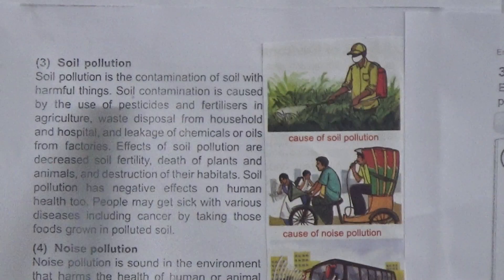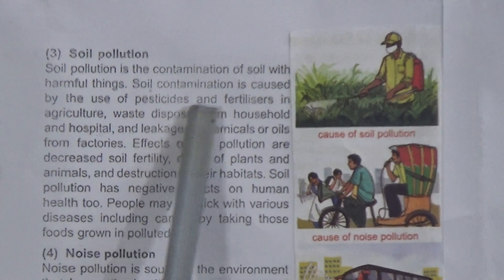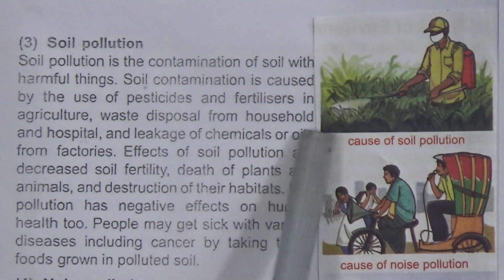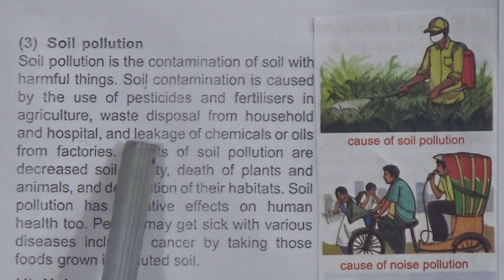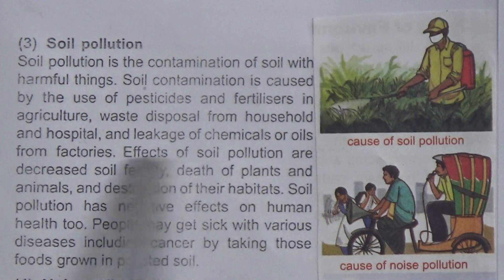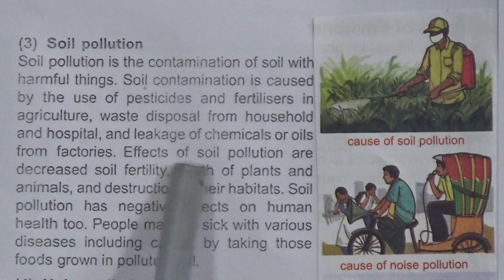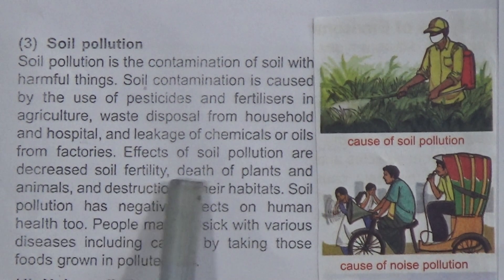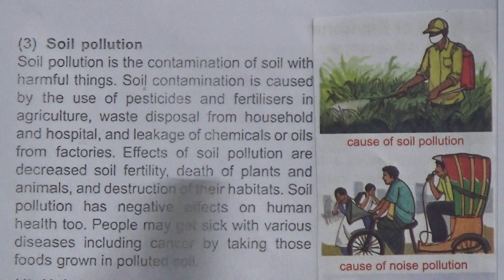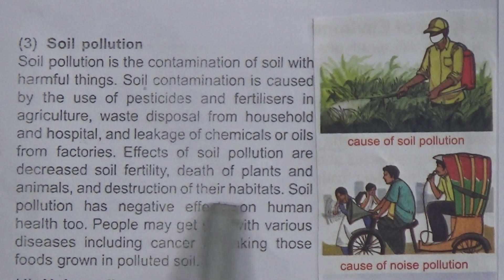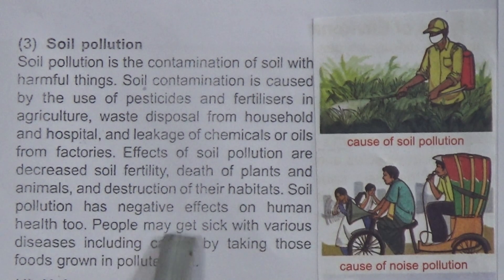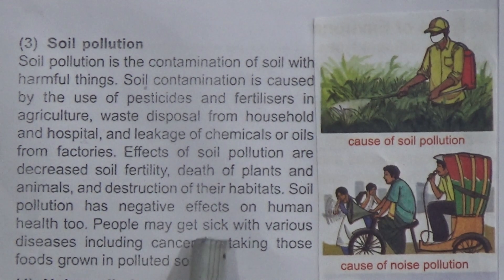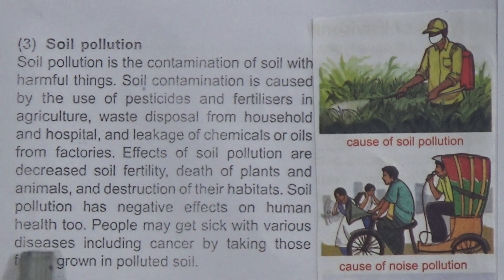Soil contamination is caused by the use of pesticides and fertilizers in agriculture, waste disposal from households and hospitals, and leakage of chemicals or oil from factories. Effects of soil pollution include decreased soil fertility, death of plants and animals, and destruction of their habitats. Soil pollution also has negative effects on human health.